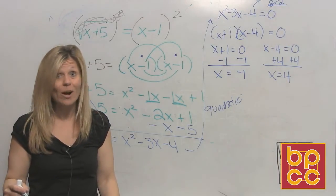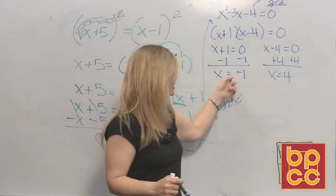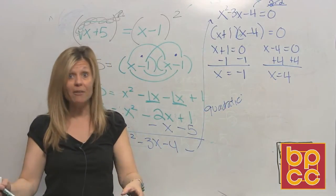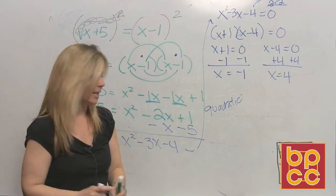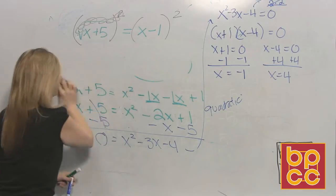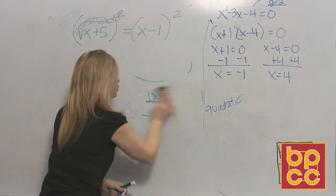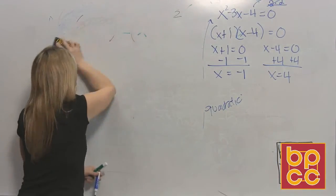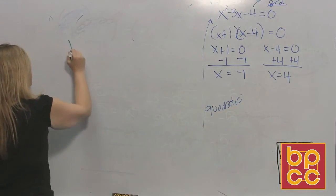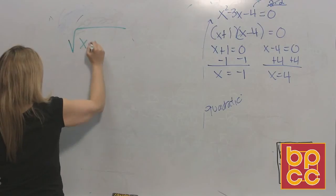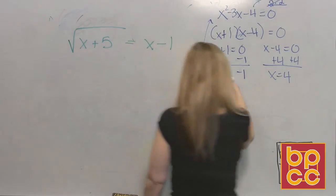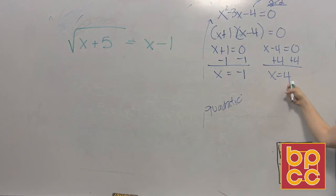So I'm warning you all the third time. If you solve it, you must check it. Where do you check? You go back to the very original. So now that we've got two solutions, the only way to see if these both are right is to write the original equation. The original equation was square root of x plus five equals x minus one. You can only check one at a time. Let's check the four first.